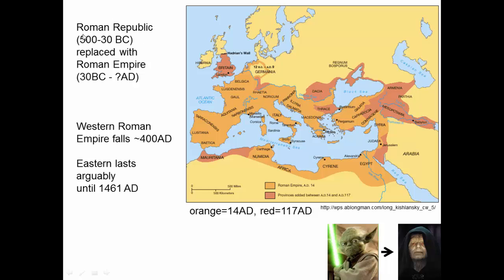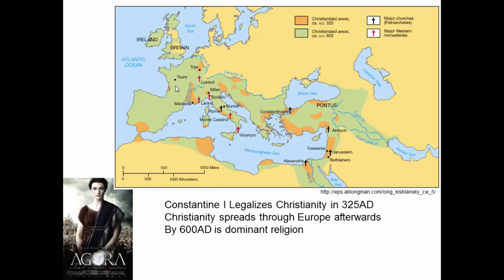Following the Greek Empire we have the Roman Republic, based in Italy, which lasted about 500 years before being replaced by the Roman Empire — just like in Star Wars, a republic taken over by an emperor. Rome was very organized; they built roads everywhere and imposed their beliefs across the western world. The western Roman Empire falls around 400 AD, lasting about 400 years, though historians argue the eastern Roman Empire lasted about another thousand years.